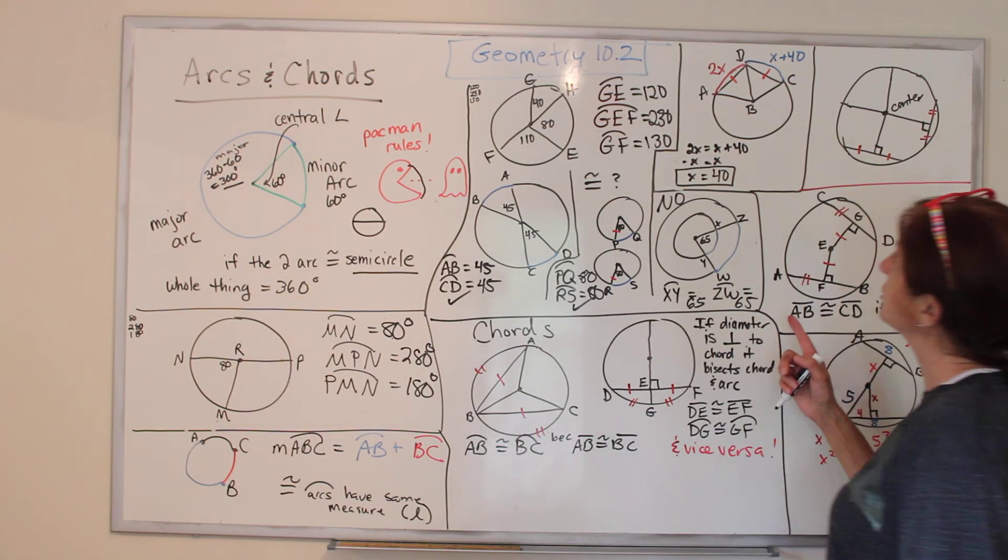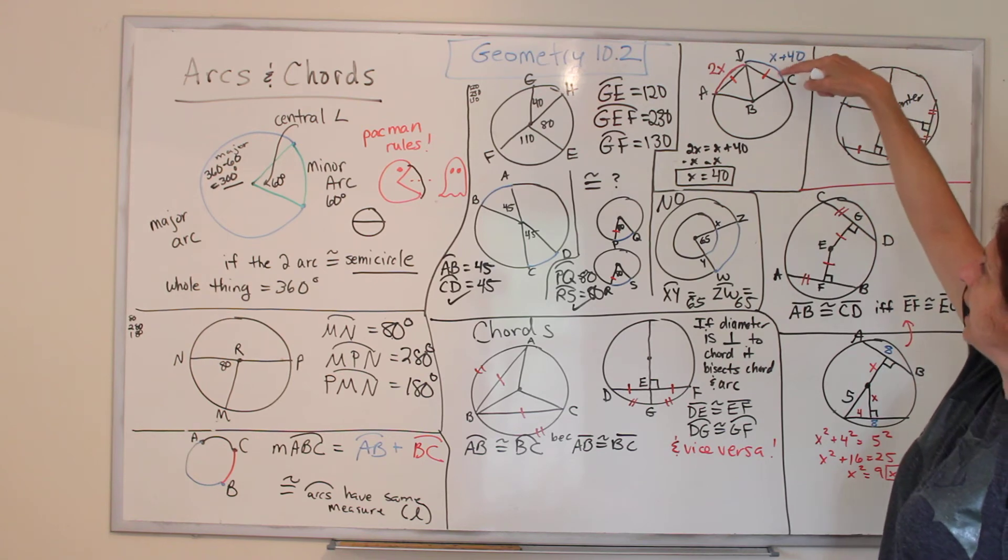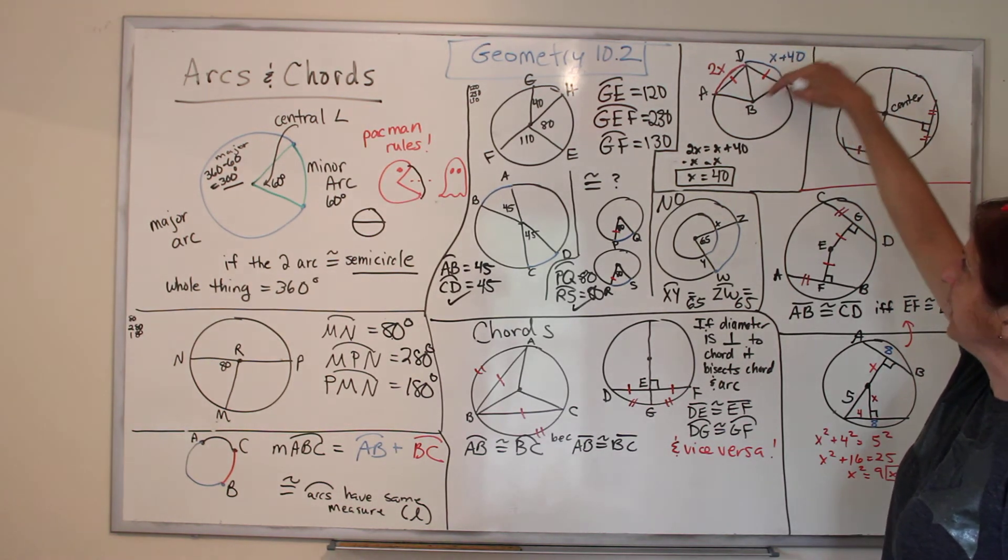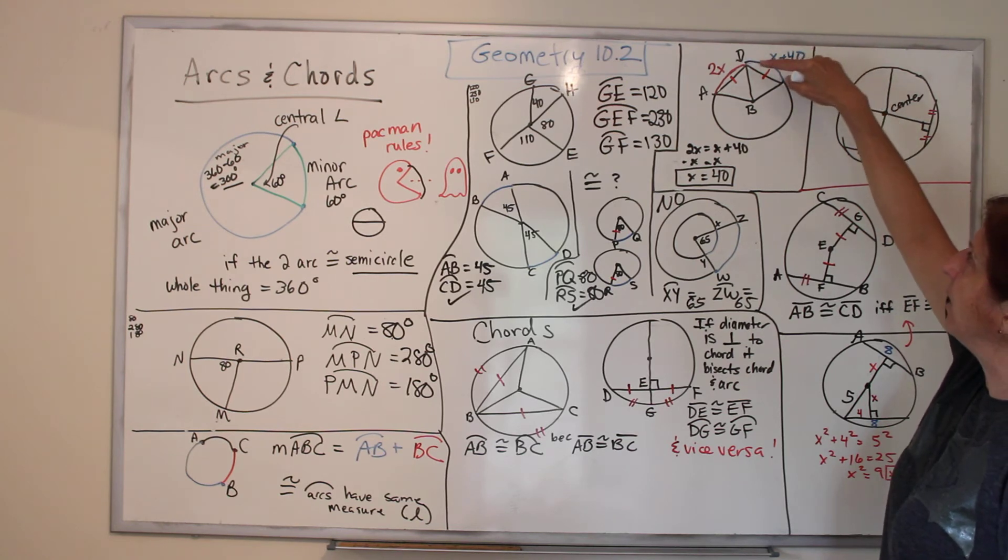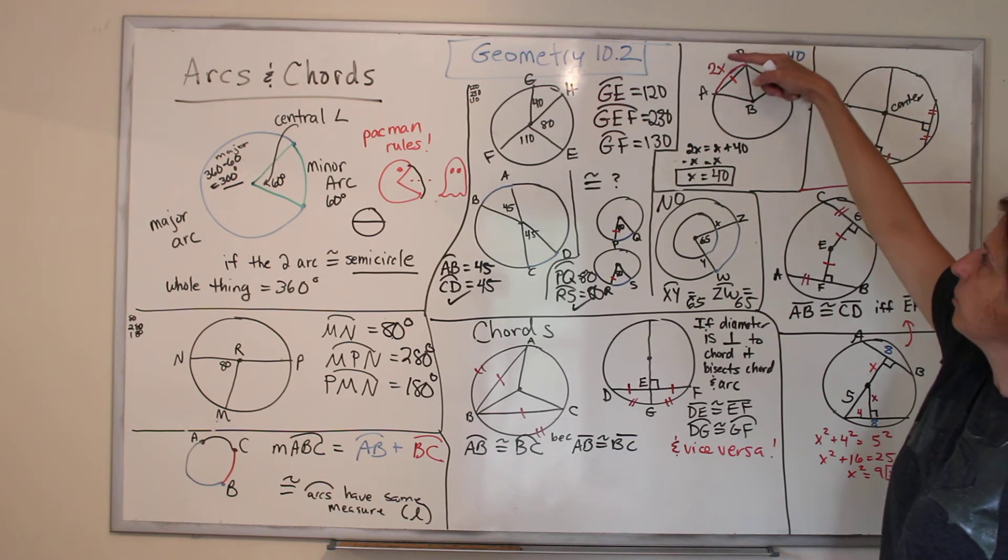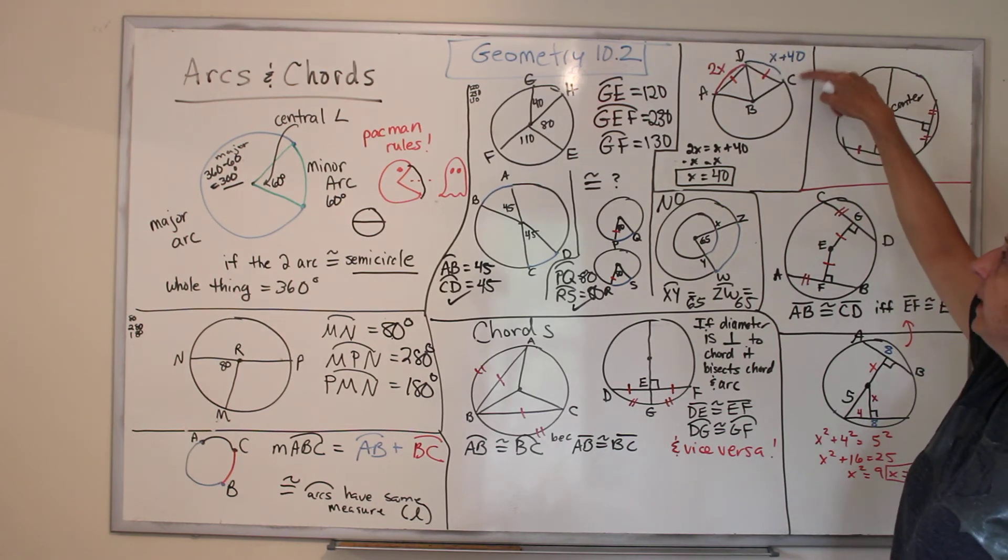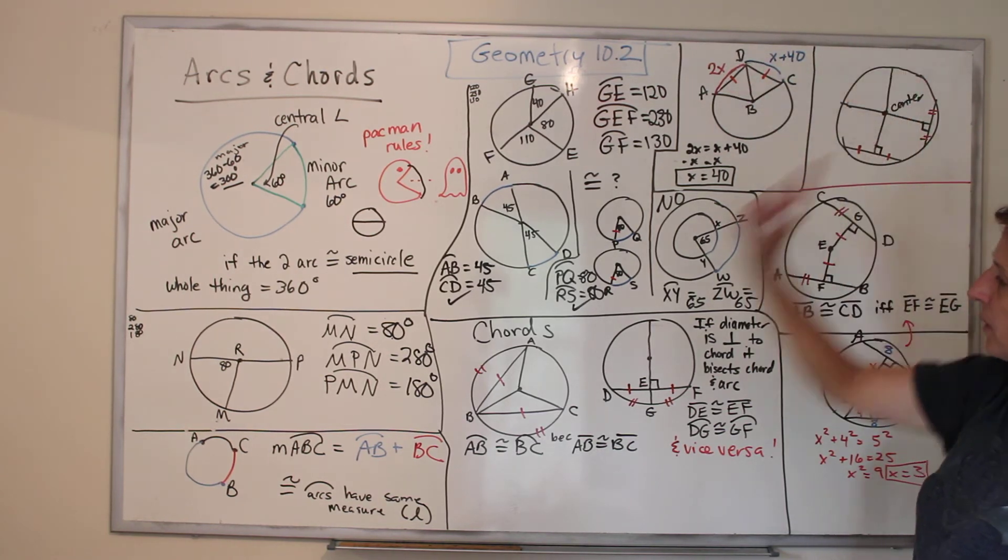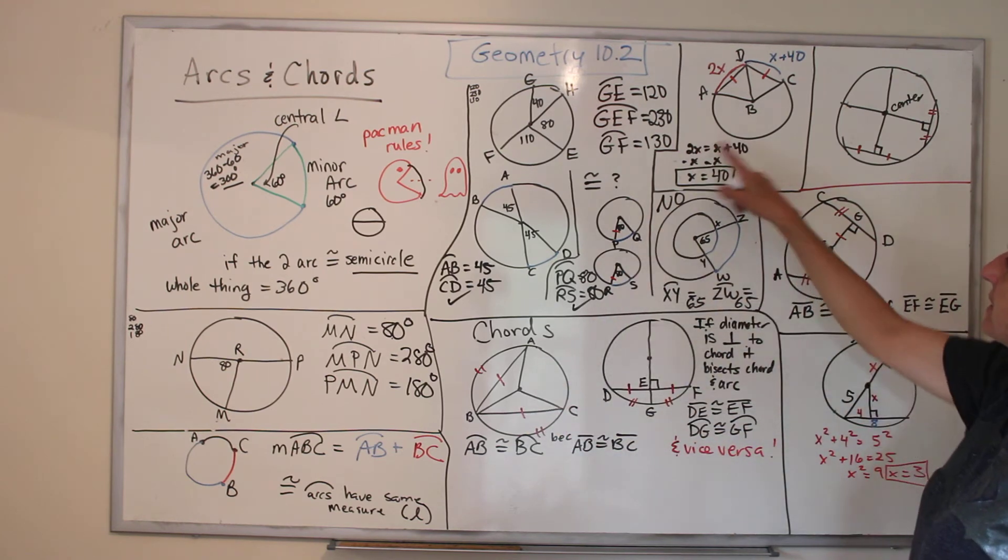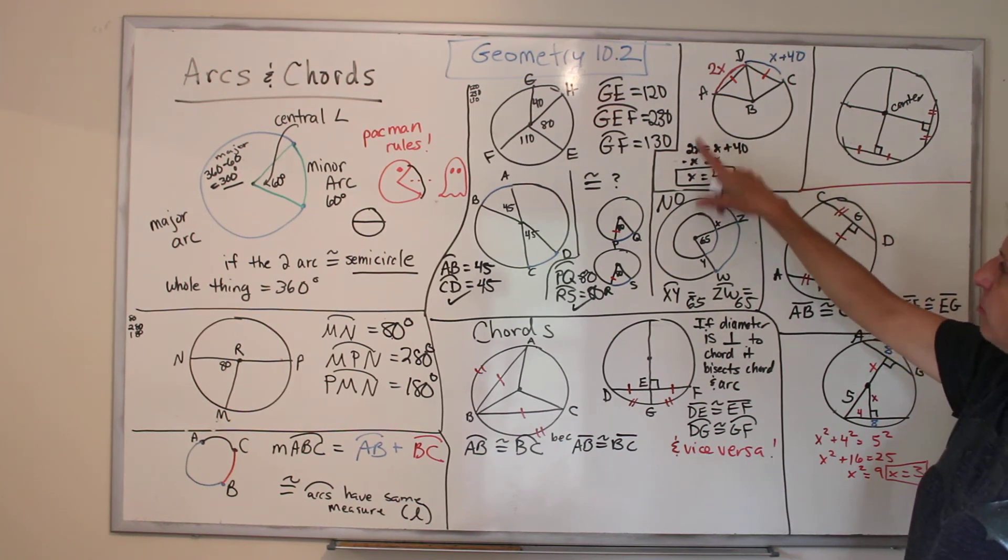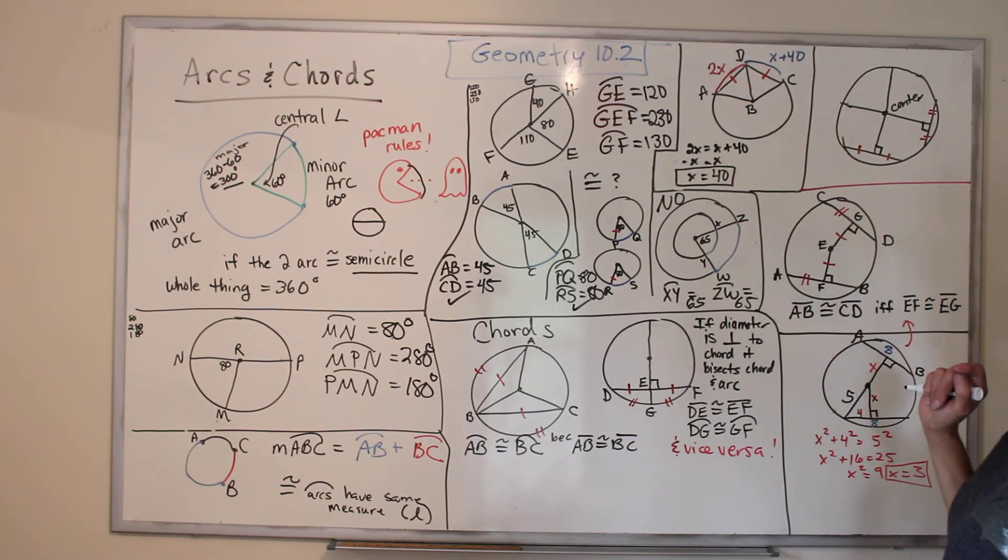So here's our next one. If you've got three radii going out, we have two chords that are the same length. And we're told that this arc is 2X, and that one is X plus 40. We know they're equal because of that. So we can set them equal and solve for X, which is 40. We subtract X from both sides, and you get X equals 40.